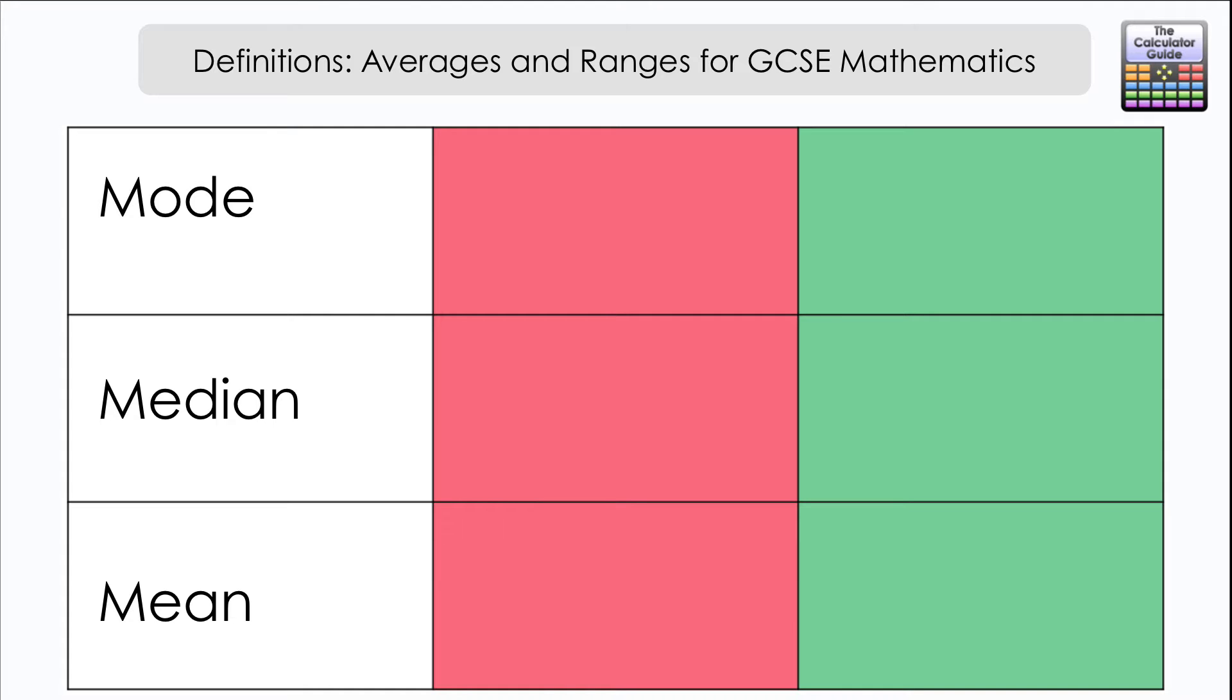Let's start off with the mode. When I ask about this I often get 'mode is most common.' That's not incorrect but I'm going to change the language used slightly. I'm going to change that definition to most frequent or most frequently occurring value.